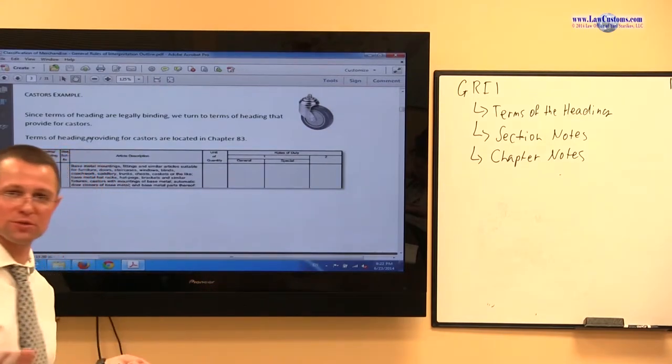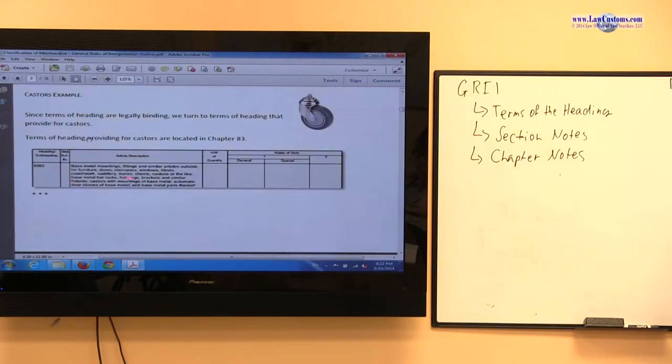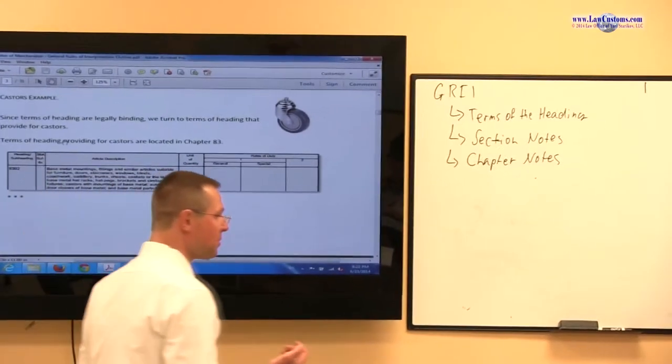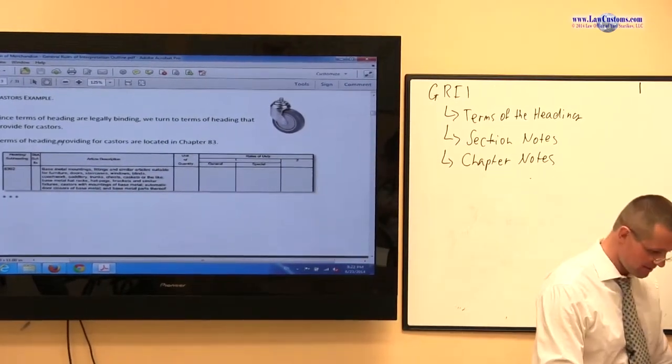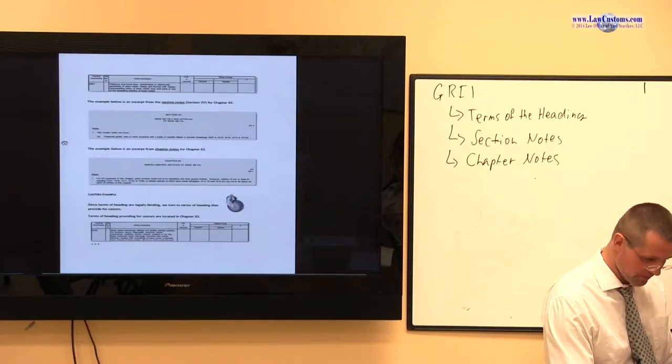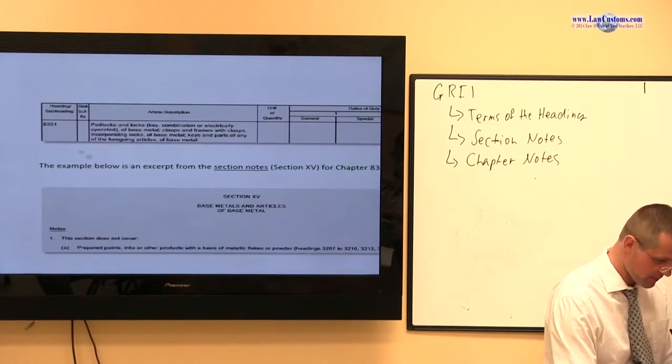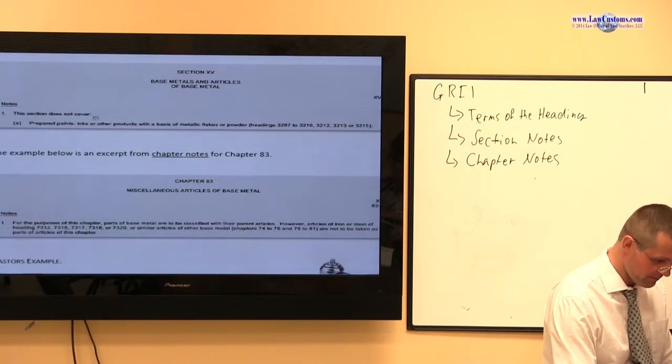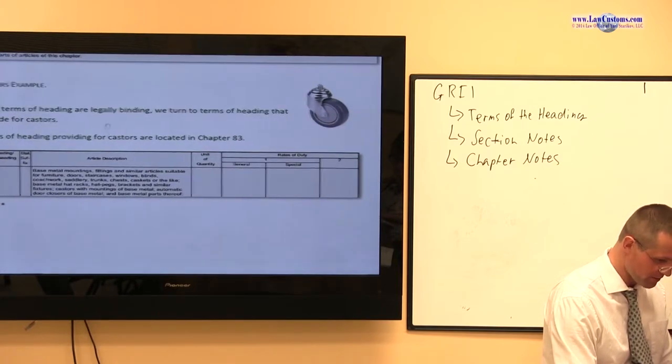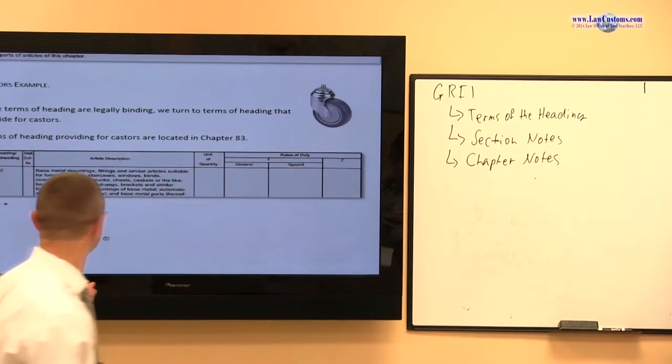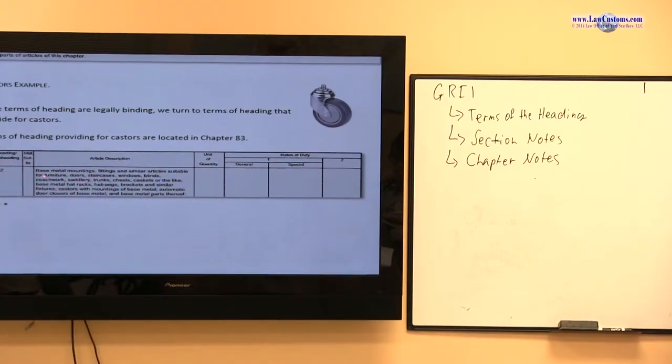Why are you looking at terms of the heading? Because it's legally binding. And you start reading the terms of the heading, and you find caster. So, you have a semicolon over here, and a semicolon over here. So, one of the separate products here is specifically listed as casters. Right?